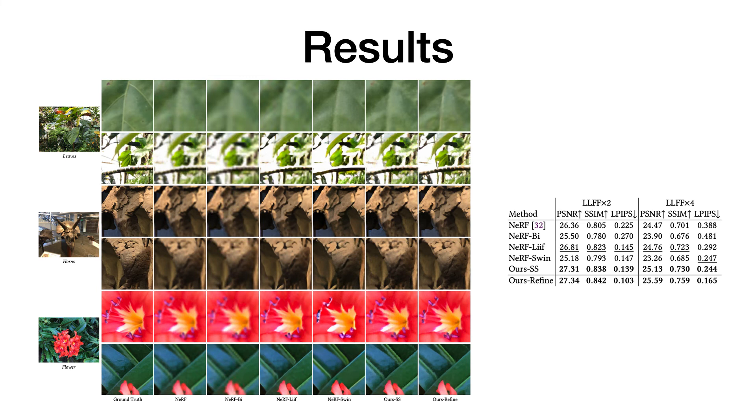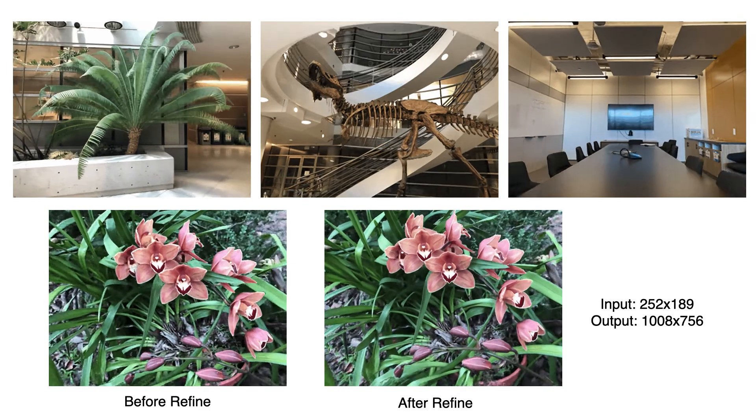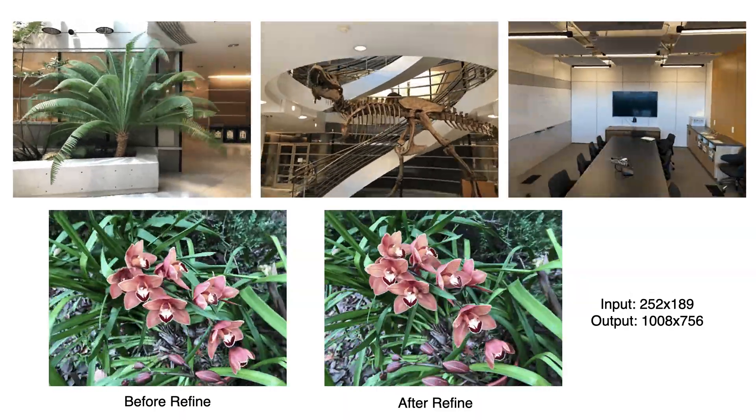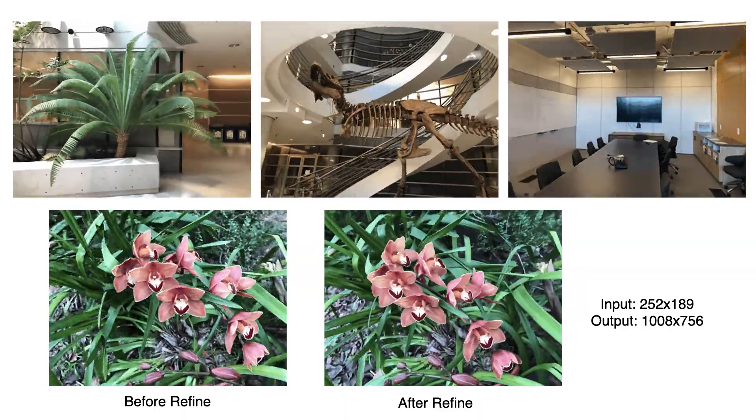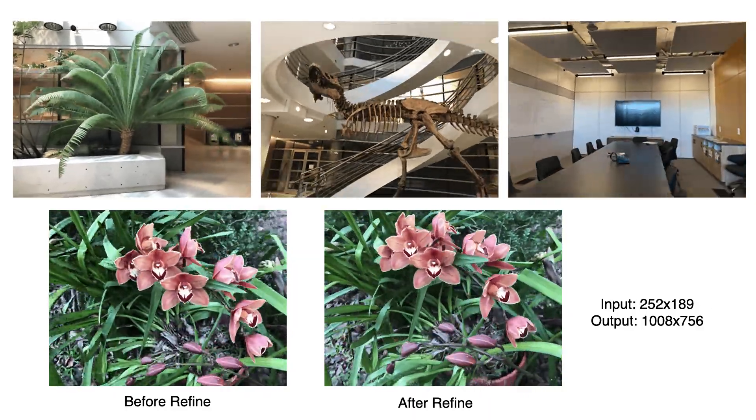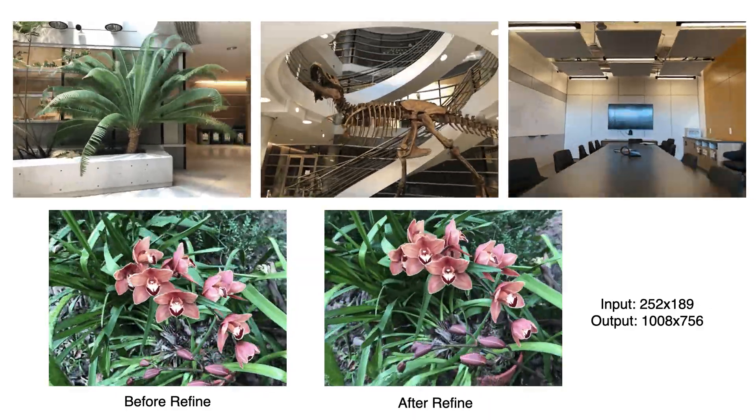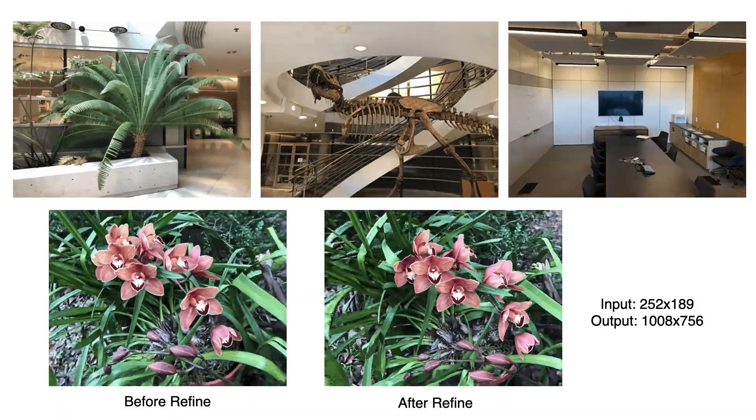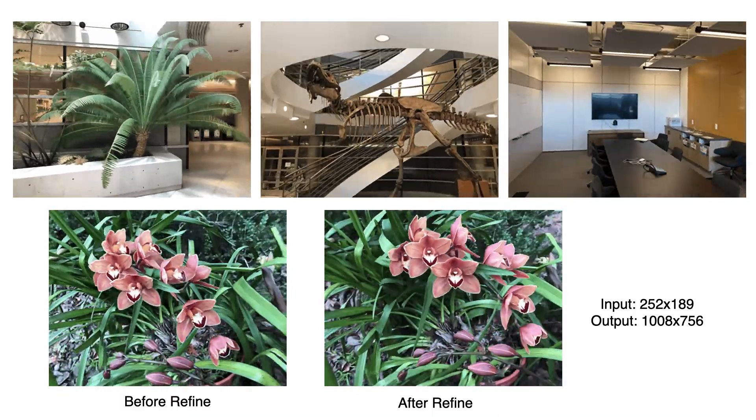The inference time of the refinement stage is negligible compared to NeRF's volumetric rendering. It is clear to see that the refinement network boosts supersampling with texture details and edge sharpness, especially for the upscale of 4. We also create a virtual camera path for LLFF dataset. We can see from the first row that supersampling is able to create high-quality novel views with low-res inputs. The videos in the second row show that the refinement network further boosts its performance.